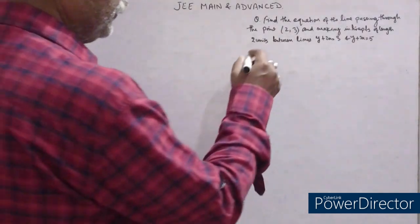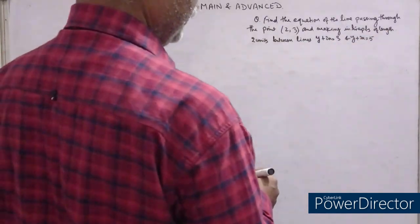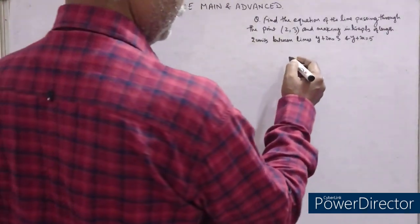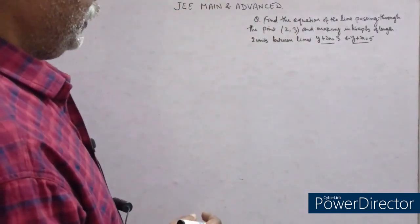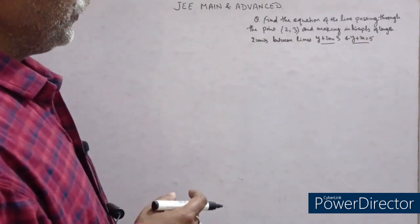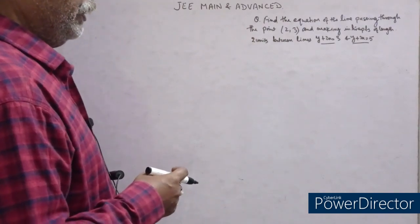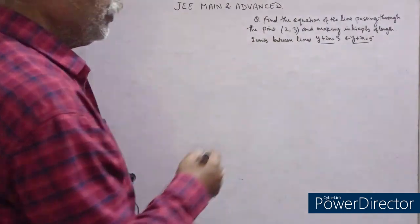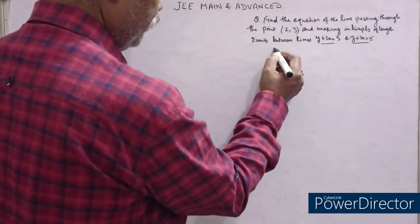Today's question is: find the equation of the line passing through a given point and making intercepts of length 2 units between two given lines. These are IIT questions from the 90s. Find the equation of the line passing through the point and making intercepts of length 2 units between the lines.